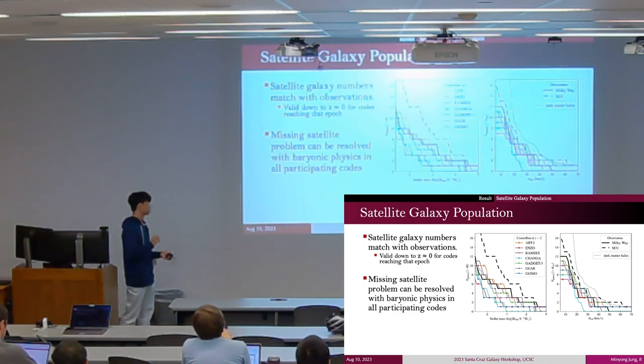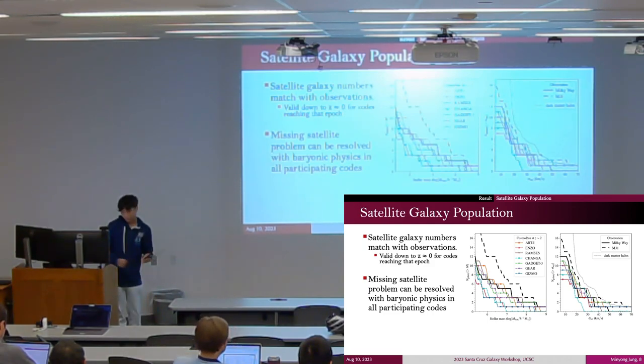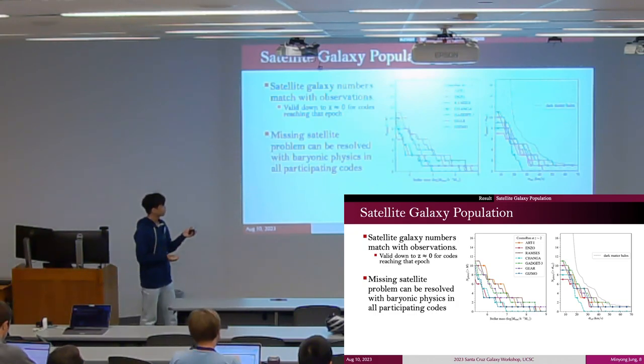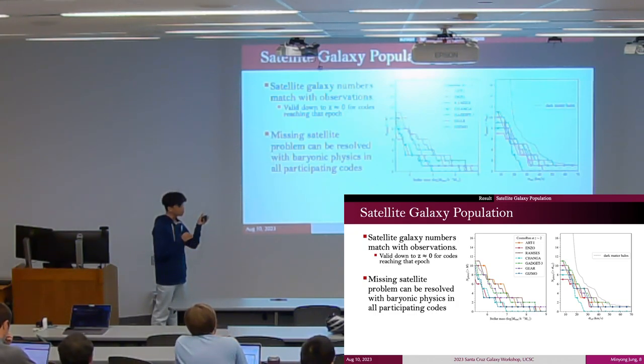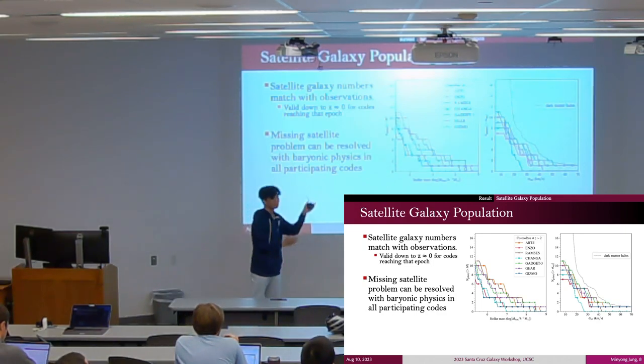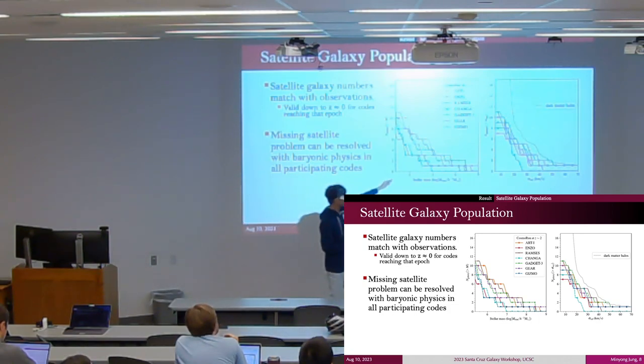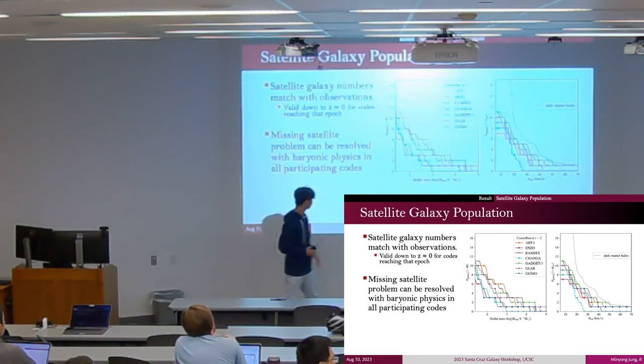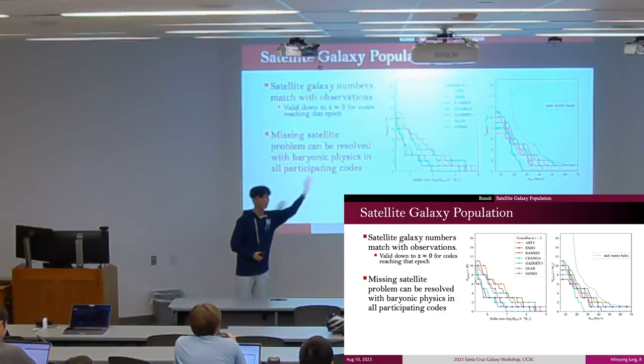There are two main reasons. The number of dark matter halos itself is decreased in hydrodynamic simulations, that's one thing. And most of the dark matter halos in hydrodynamic simulations are also dark because they cannot form stars. This right plot shows the difference between the abundance of dark matter halos and those with luminous stars.